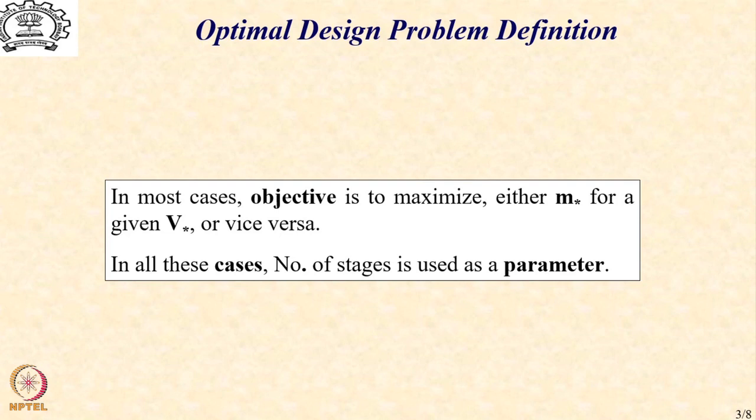So, what we do is that we take the next best course. We use the number of stages as a parameter. What essentially it means is that we generate a large number of optimal solutions for different values of n. And then among those solutions, we will pick one which is the most suitable for our mission objectives.